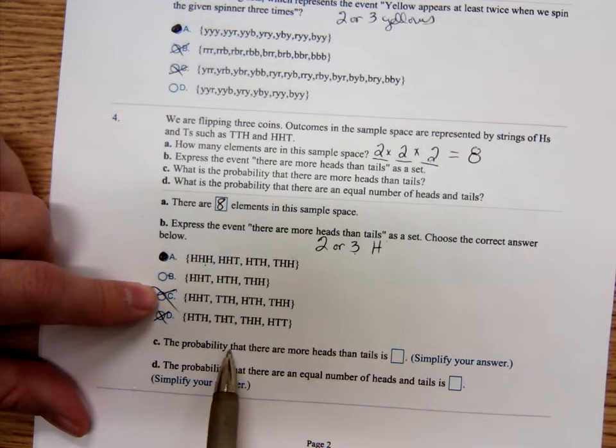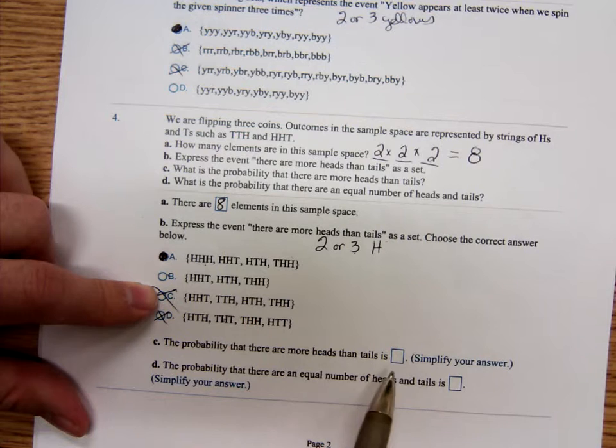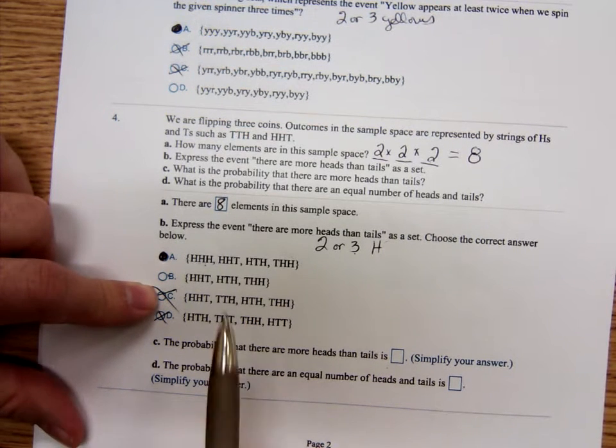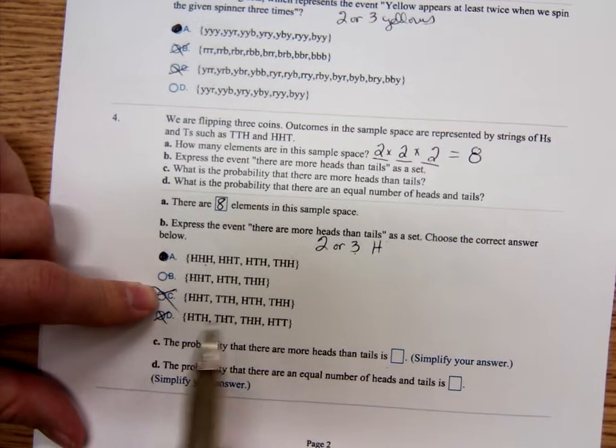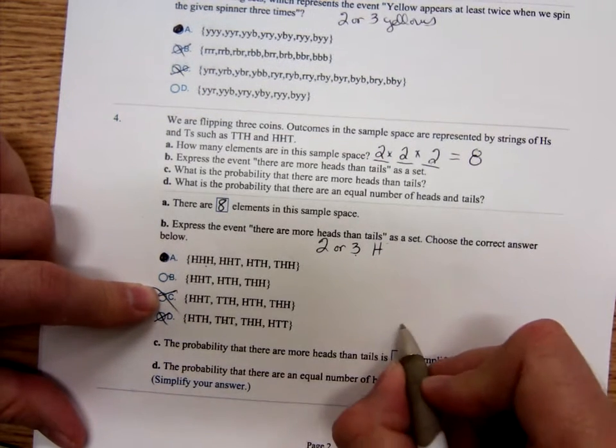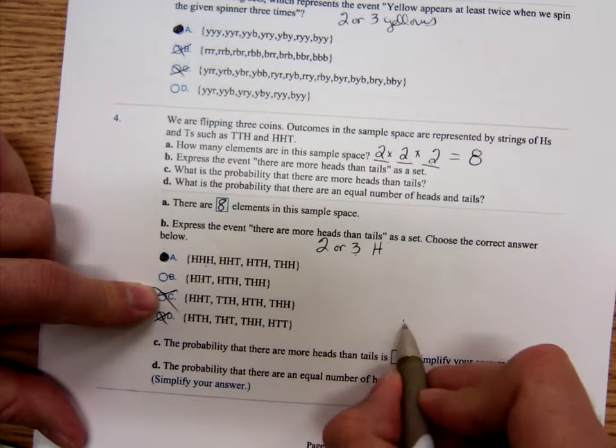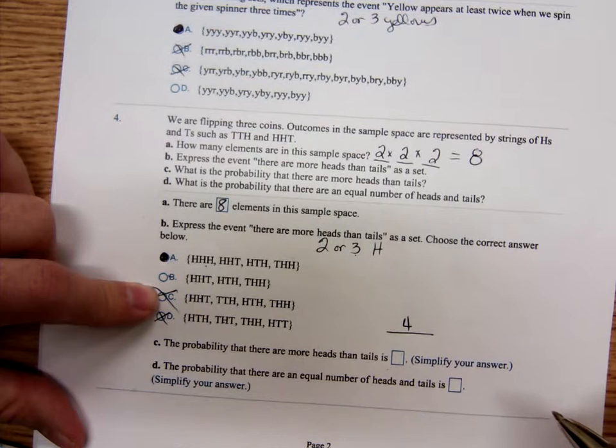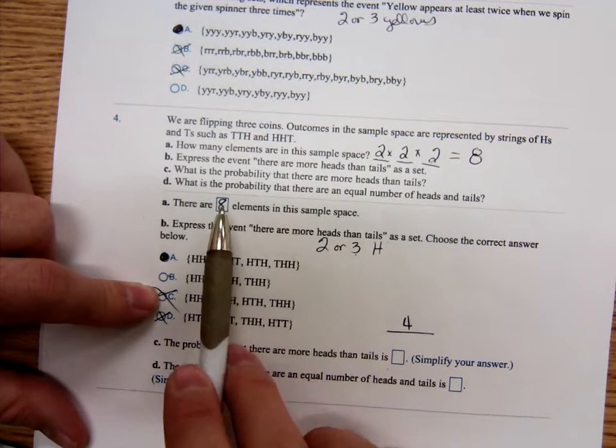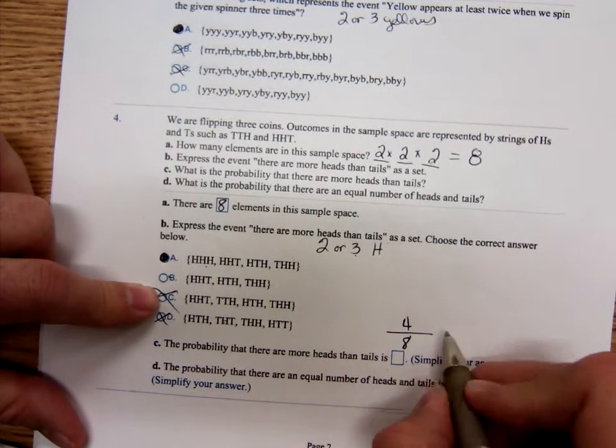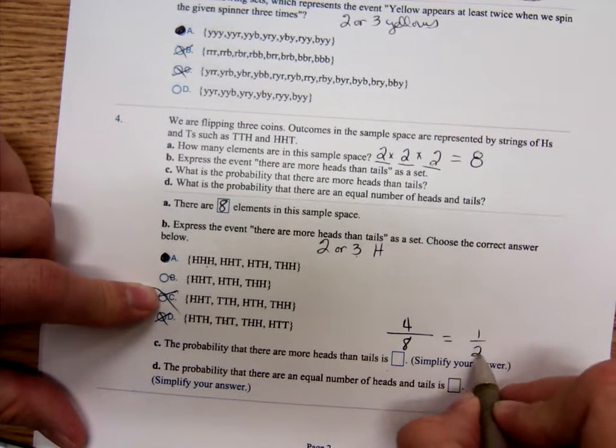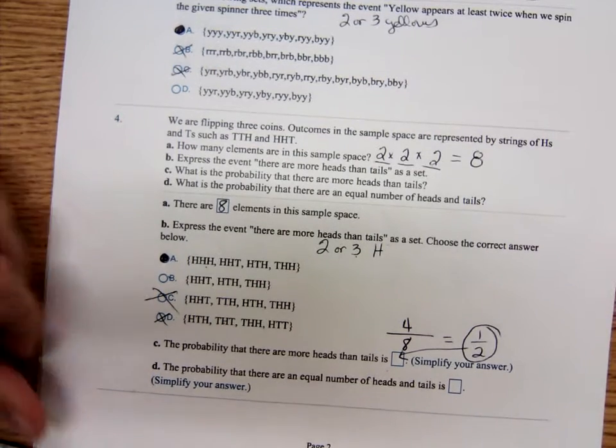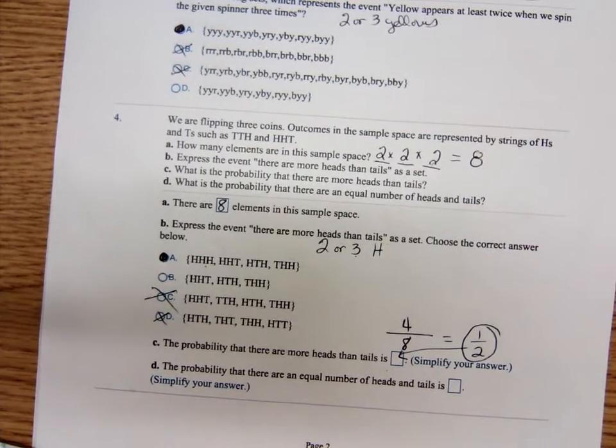Now, the probability that there are more heads than tails. The way we calculate probability is we're going to write, how many ways could you get more heads than tails? Well, there are four ways, possibilities out of how many possibilities are all together. Well, that's eight. So, four eighths or one half. The probability of getting more heads than tails is one half.